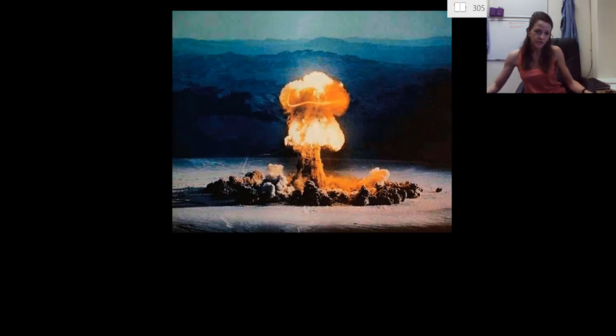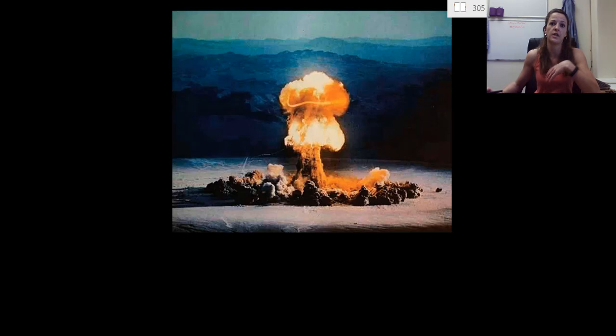This is actually a picture of our test run. It was called Priscilla. That was the codename. And so they did this right outside of Las Vegas. And so this specific atomic bomb that they dropped, so this is a weapon called Priscilla, this one actually was twice as powerful as the bombs that were dropped in Nagasaki and Hiroshima.